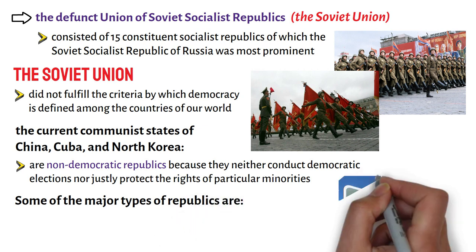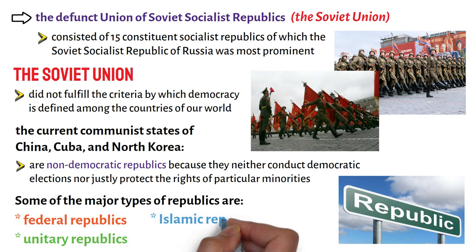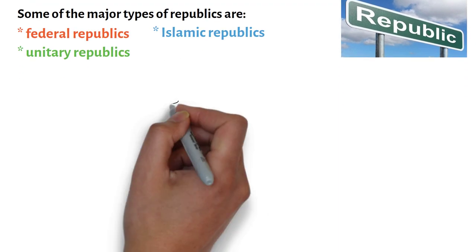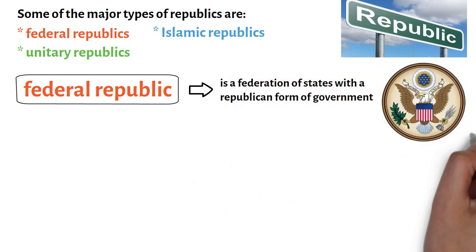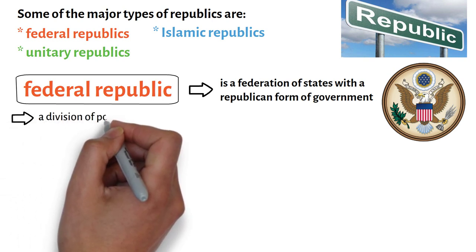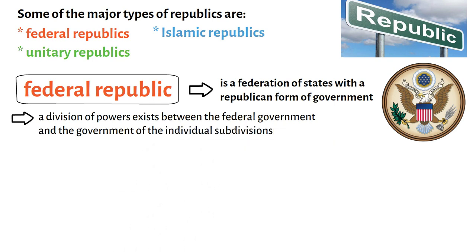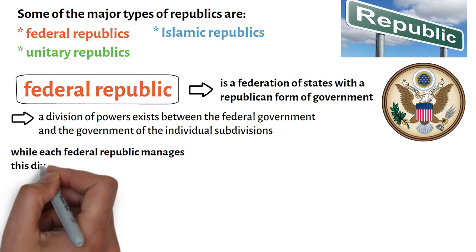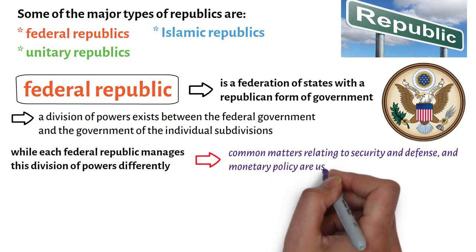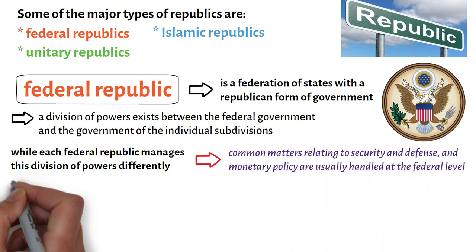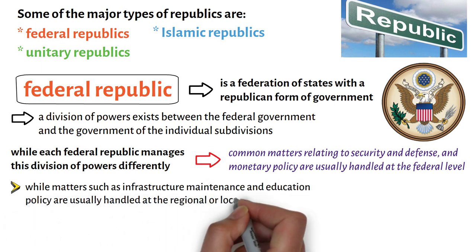Some of the major types of republics are federal republics, unitary republics, and Islamic republics. A federal republic is a federation of states with a republican form of government. Here, a division of powers exists between the federal government and the government of the individual subdivisions. While each federal republic manages this division of powers differently, common matters relating to security and defence and monetary policy are usually handled at the federal level, while matters such as infrastructure maintenance and education policy are usually handled at the regional or local level.